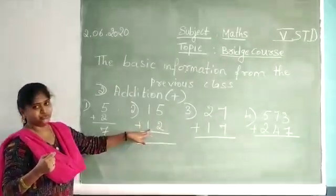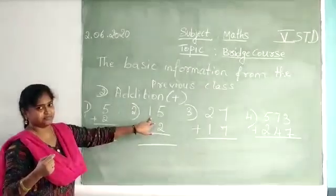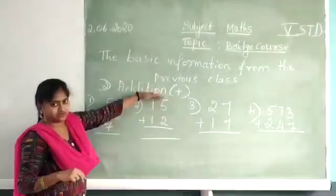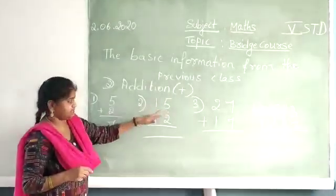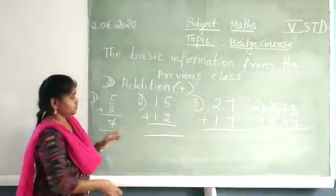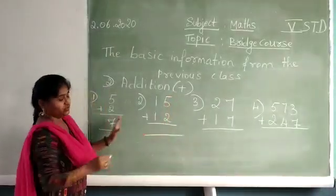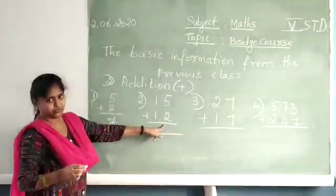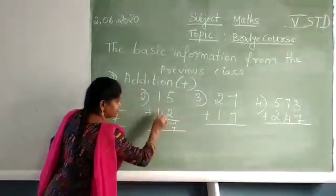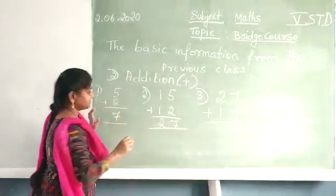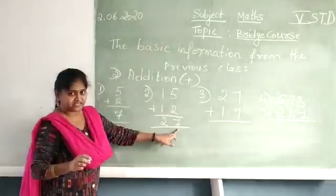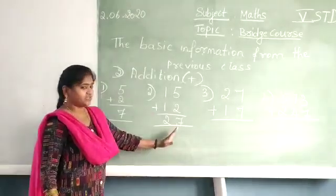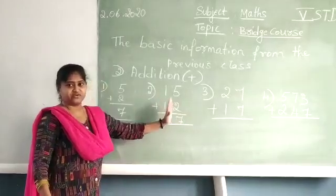15 plus 2. Here you can see 2-digit numbers. 15 plus 2. So now you are adding first with the ones place, or units place. 5 plus 2 is 7, and 1 plus 1 is 2. So you can say this number as 27 — 7 is in the ones place and 2 is in the tens place. In addition, the rule is you must always work from right to left.